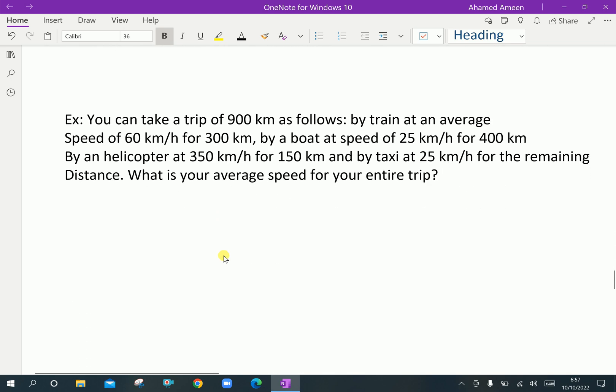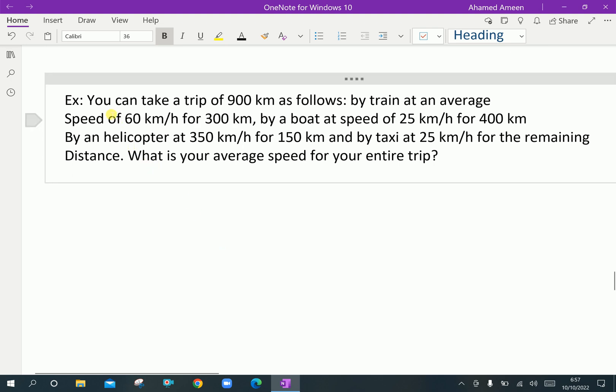We can understand this concept by using some example problem. Look at this example. You can take a trip of 900 kilometer as follows. By train at an average speed of 60 kilometer per hour for 300 kilometer, by a boat at speed of 25 kilometer per hour for 400 kilometer, by an helicopter at 350 kilometer per hour for 150 kilometer and by taxi at 25 kilometer per hour for the remaining distance. What is your average speed for your entire trip?